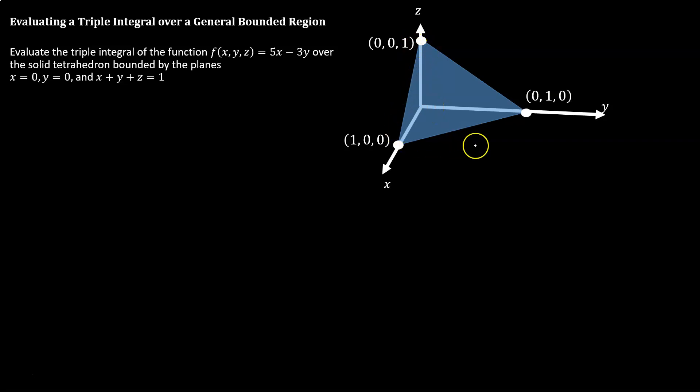We want to integrate over this three-dimensional region. And we're integrating the function of three independent variables, f of x, y, z equals 5x minus 3y.